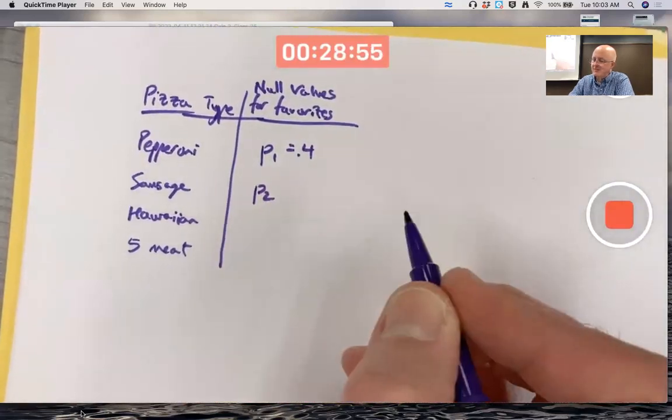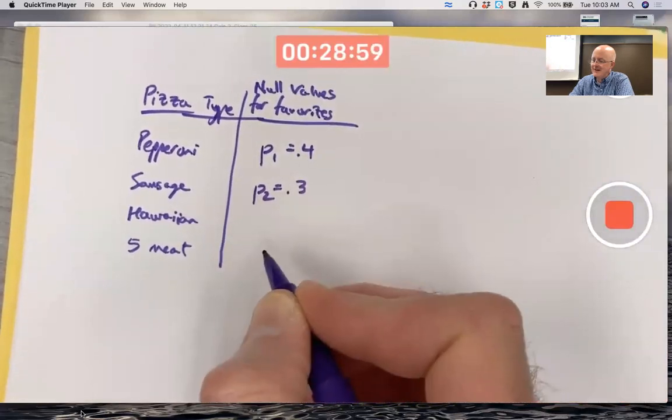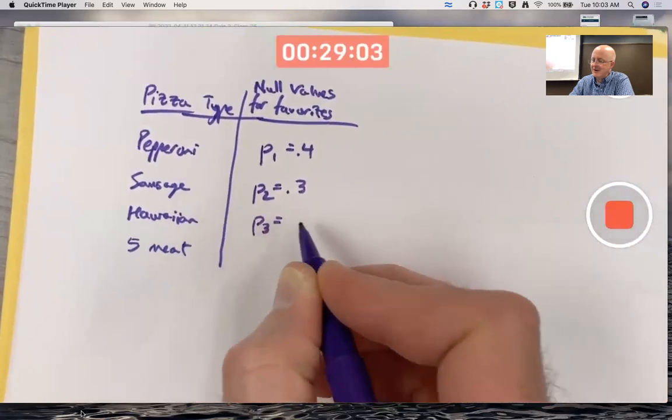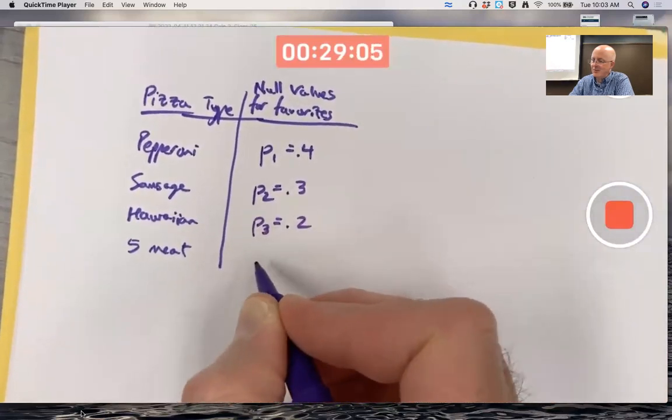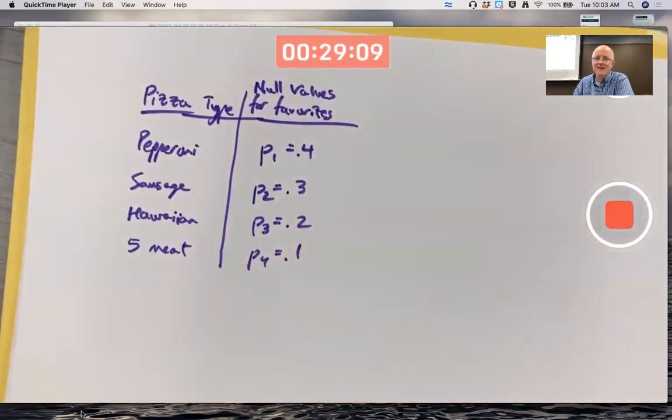And all the other ones are going to be smaller. Sausage you think it's 0.3, Hawaiian you think it's 0.2, and five meat is 0.1. So those are your null values for the favorites.